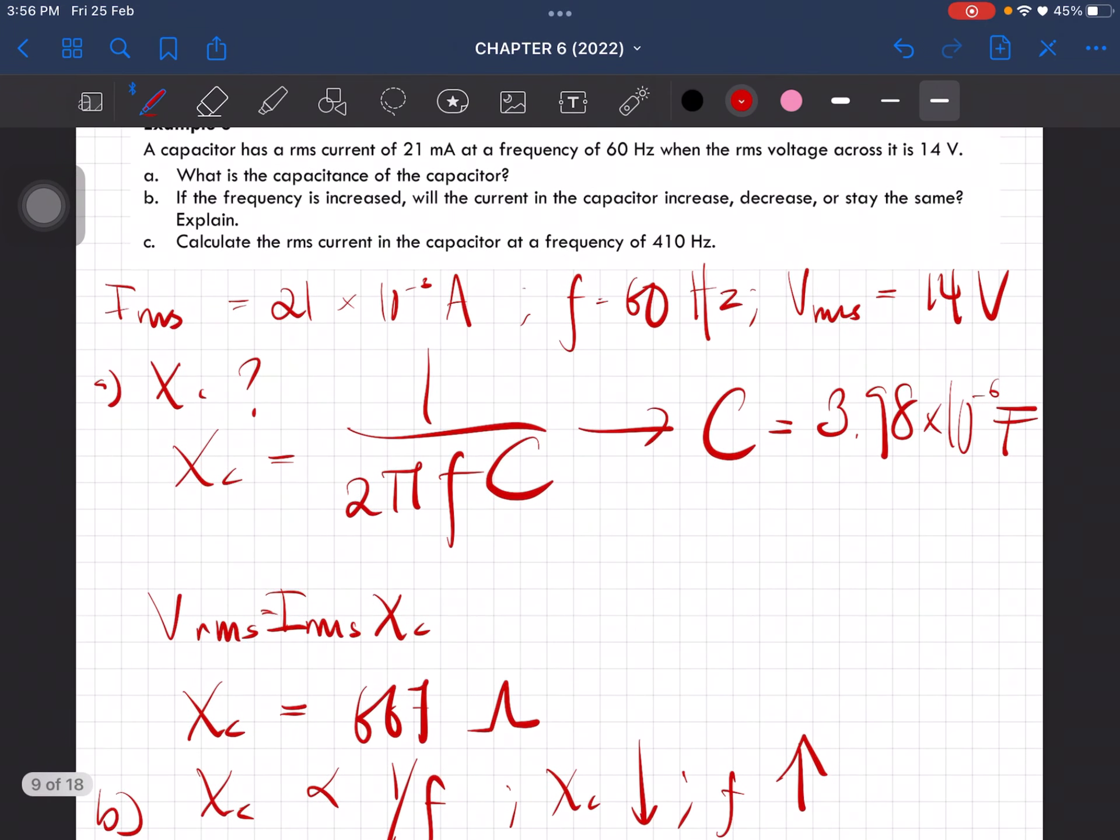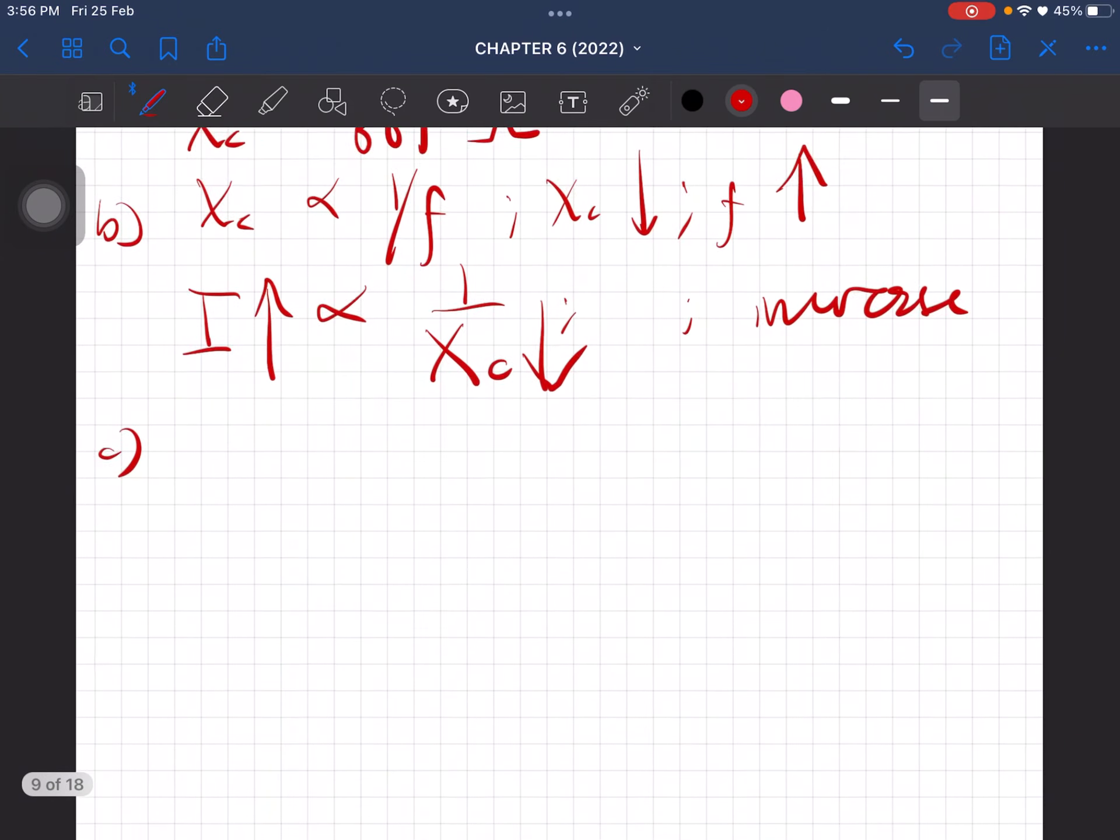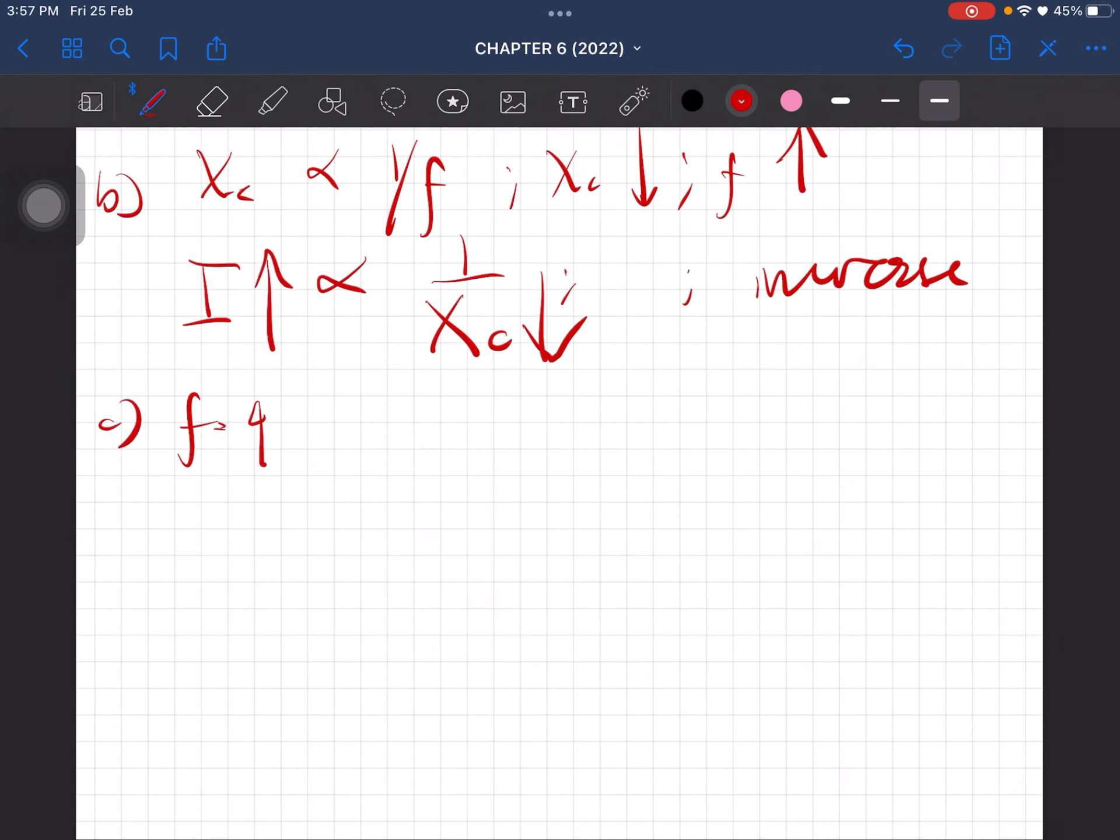Question C: we have to calculate the RMS current at the frequency of 410 hertz. First, we have to calculate the new capacitive reactance.